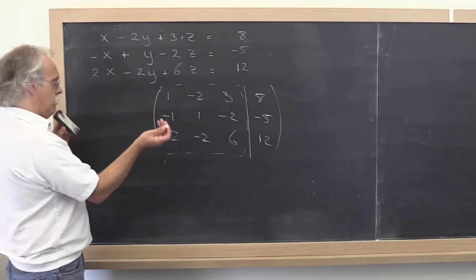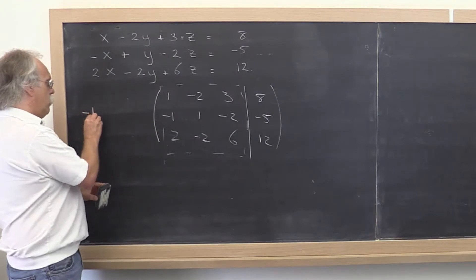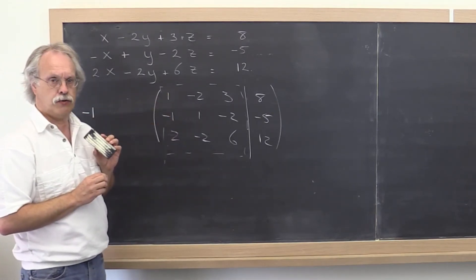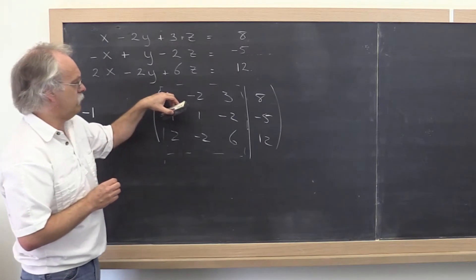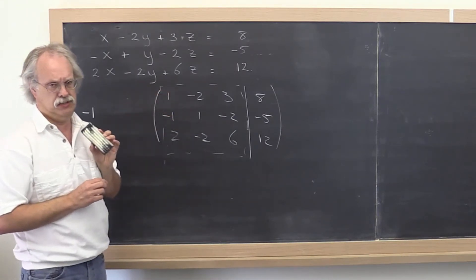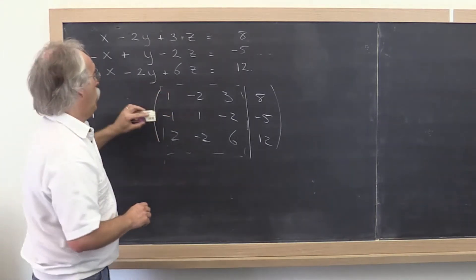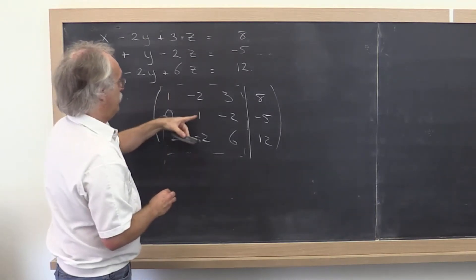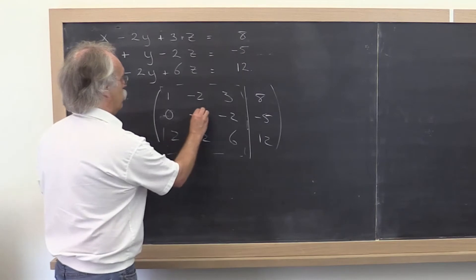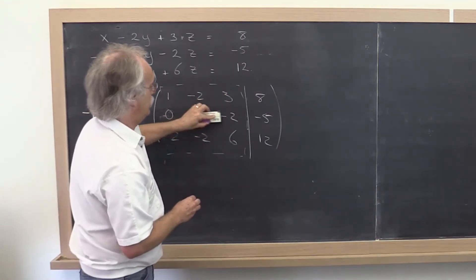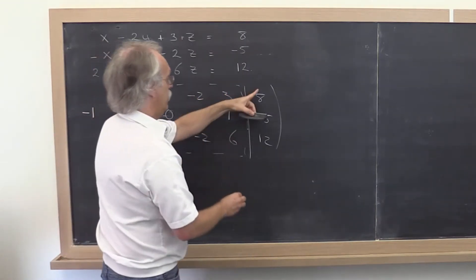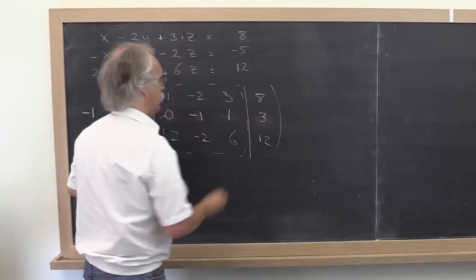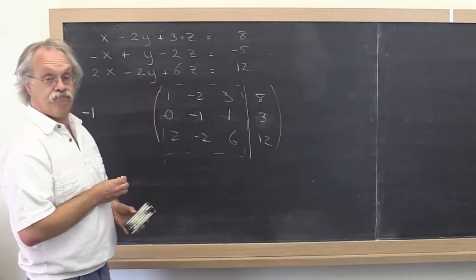So let's write that down somewhere. Minus 1 times the first row is being subtracted off of the second row. And of course that just means that we take the first row and we add it to the second row. So that becomes a 0. That is added to that and becomes a minus 1. That is added to that and becomes a 1. That is added to that and becomes a 3. So far so good?